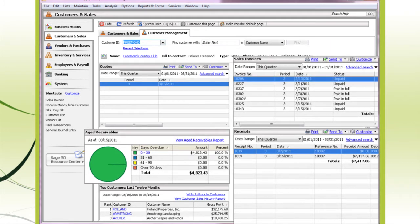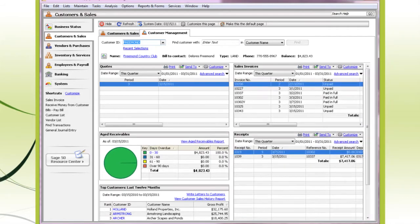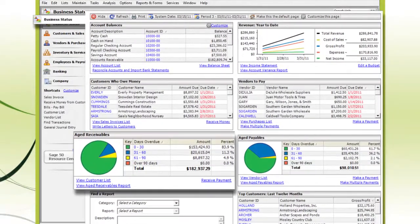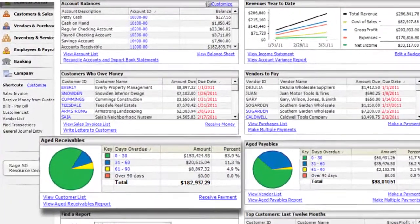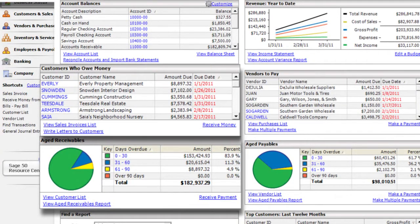What if I wanted to zoom out a bit, maybe see some payment patterns? The Business Status Center and Age Receivables reports show you which customers owe you money and how long it takes customers to pay.